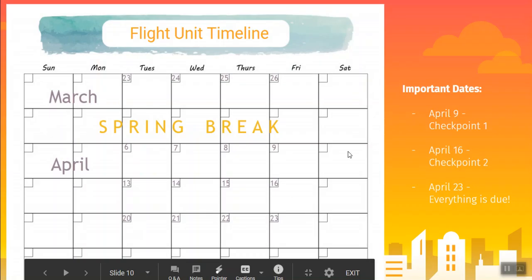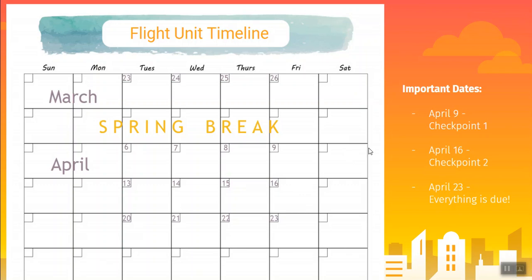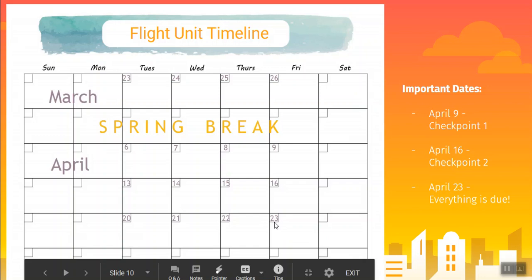As we look at the timeline for these assignments, because three assignments is a lot — especially with it being student-directed — we want you to have checkpoints so you can check your progress and make sure you're on the right track. It's probably Tuesday, March 23rd, or maybe Wednesday, March 24th, so we've got a couple of classes before spring break to get started. The week back from spring break on April 9th is our first checkpoint — you should have at least one of those assignments totally done. By the next Friday, April 16th, that's your second checkpoint. And by April 23rd, your entrée and both side dish assignments should all be done, though the due date will probably be the following Monday.